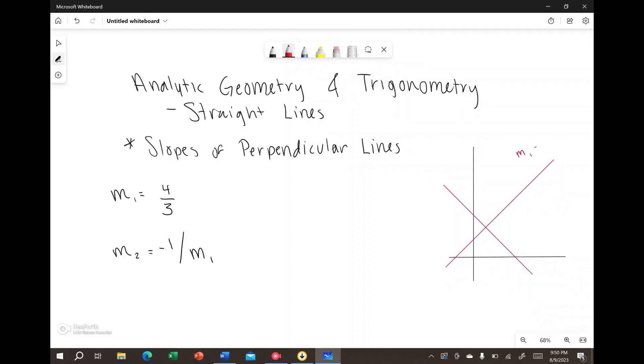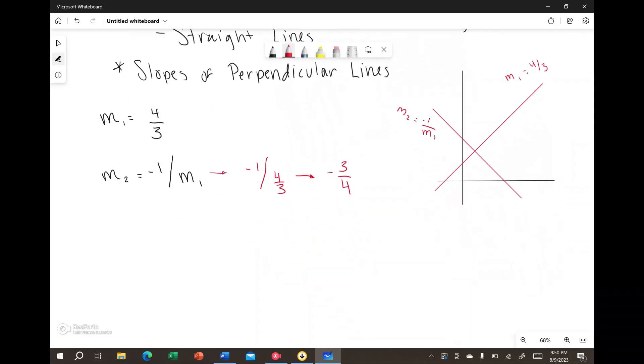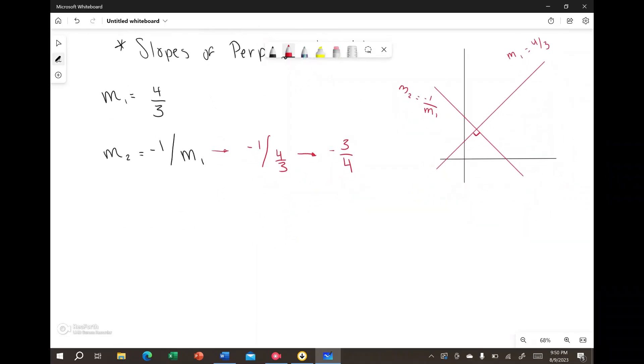Say m1 is equal to 4 over 3. m2, being at 90 degrees, would be negative 1 over m1. So that's basically negative 1 over 4 over 3, and that can be simplified to negative 3 over 4 to determine the slope perpendicular to 4 over 3.